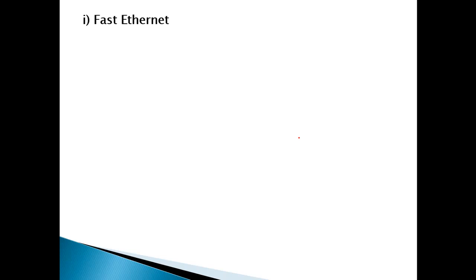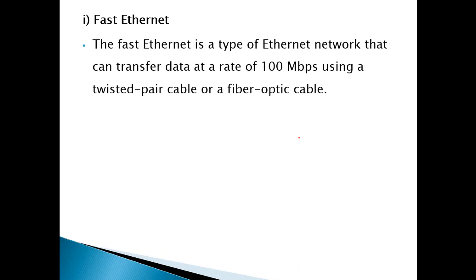In terms of speed levels, one type we have is Fast Ethernet. Fast Ethernet is a type of Ethernet network that can transfer data at the rate of 100 Mbps using a twisted pair cable or fiber optic cable. Fast Ethernet operates on both these cable types. We will discuss these cables — twisted pair and fiber optic — in detail in upcoming lectures.